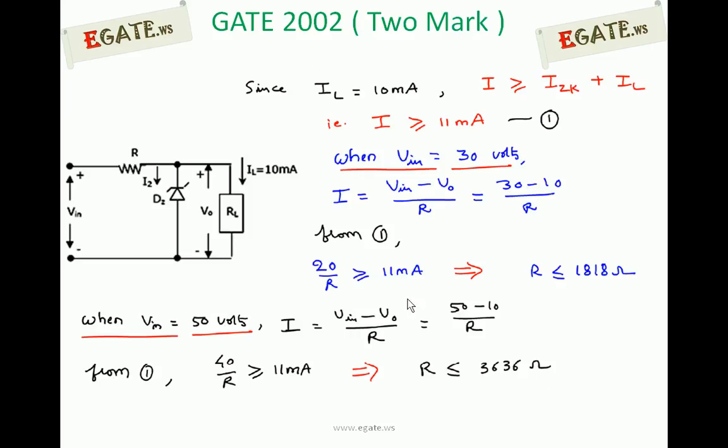From these two cases, R must be ≤ 1818Ω or R must be ≤ 3636Ω. You cannot choose a value between 1818 and 3636. If you choose like that, this condition satisfies but the other fails. If you choose R less than 1818Ω, it satisfies both cases. So choose R ≤ 1818Ω.